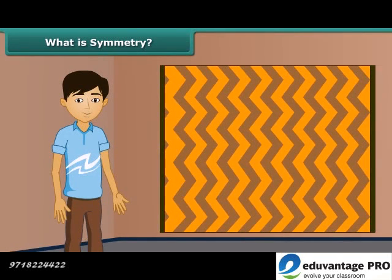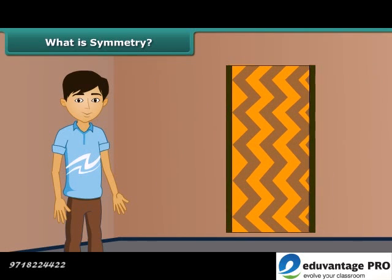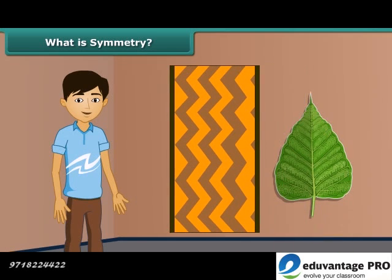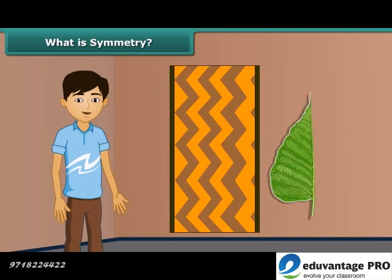Children, look at the rug. When you fold it, the left and right halves match each other. Thus, the rug is said to be symmetrical. Look at this leaf. On folding the leaf, its two halves match each other, thus it is symmetrical.